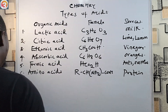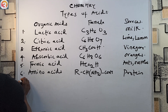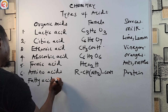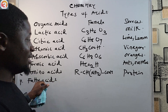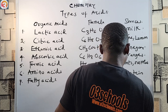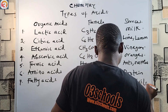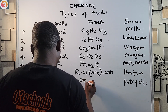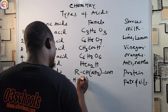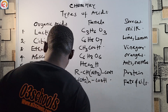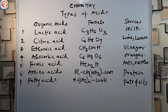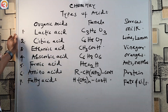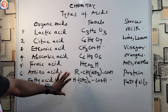Number seven: fatty acids. Fatty acids are gotten from fats and oils, and their general formula is CH₃(CH₂)ₙCOOH.